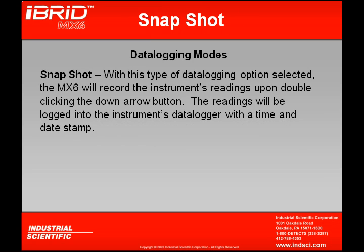The last option for my data logger is Snapshot. With this type of data logging option selected, the MX-6 will record the instrument's reading upon double-clicking my down arrow button. Whenever I double-click my down arrow button with snapshot mode enabled, it's going to take the reading, put it in the data logger, and add a time and date stamp. This is particularly useful for those monitoring VOC release points — rather than continuously data logging, they'll just capture a reading of that VOC release point with a time and date stamp, so when they download, they have those records available.